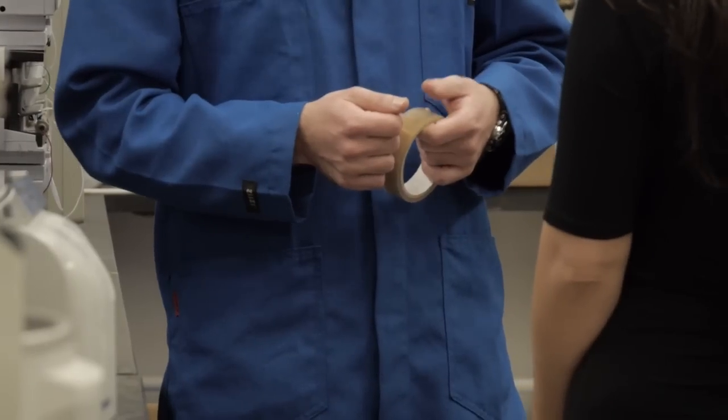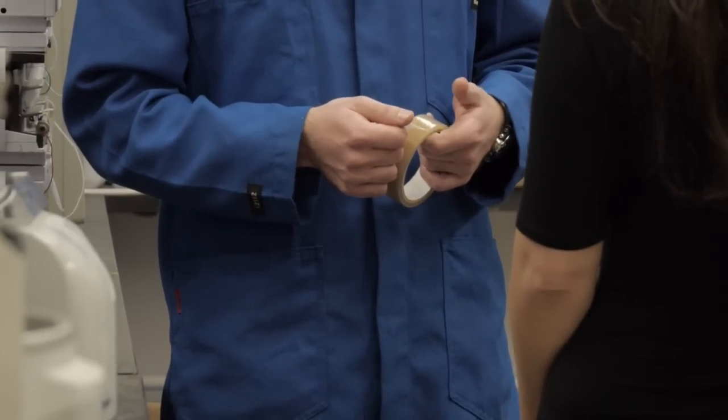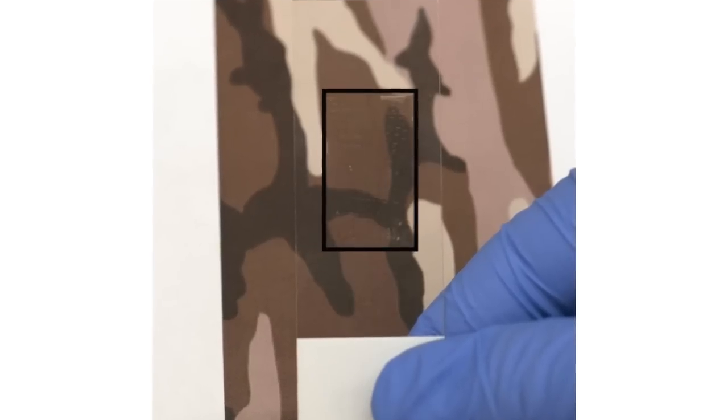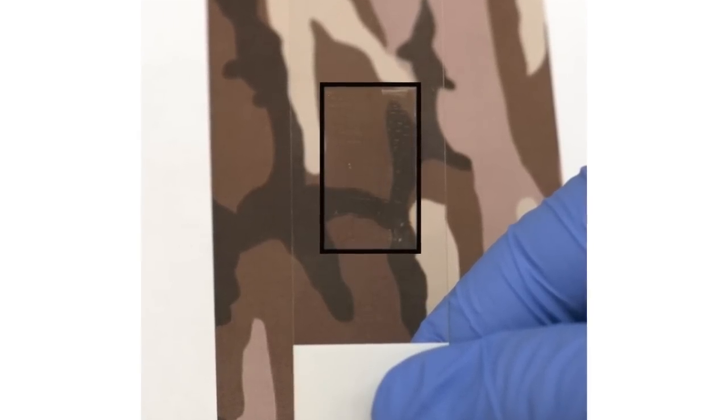The reflectin then gets coated onto a surface similar to common household packing tape, creating a sheet of invisibility stickers that could be used for camouflage.